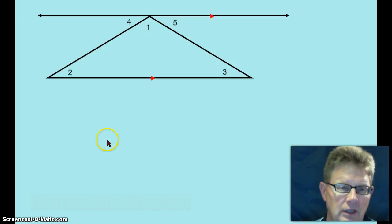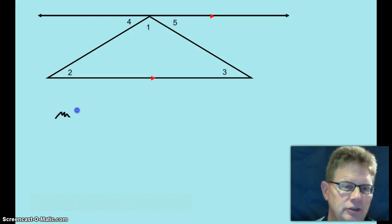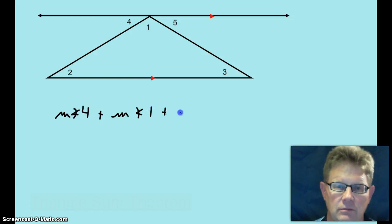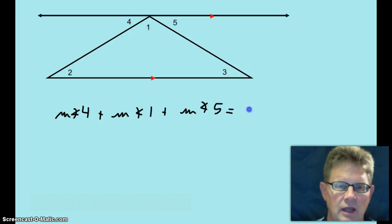First of all, I want you to look at that picture and look at the three angles up at the top. I want you to tell me what the measure of angle 4 plus the measure of angle 1 plus the measure of angle 5 is. What is the sum of those three angles?